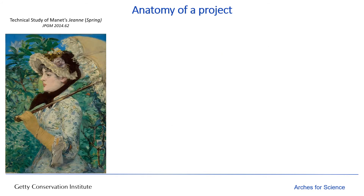It's worth taking a moment to think about what's involved in the examination of a cultural heritage object, such as the painting that you see here, to determine what would need to be accommodated in a data management platform. The first step is to break down all the parts of a technical examination to the individual concepts that you would need to render computer-readable and therefore manageable in any form of technological solution.